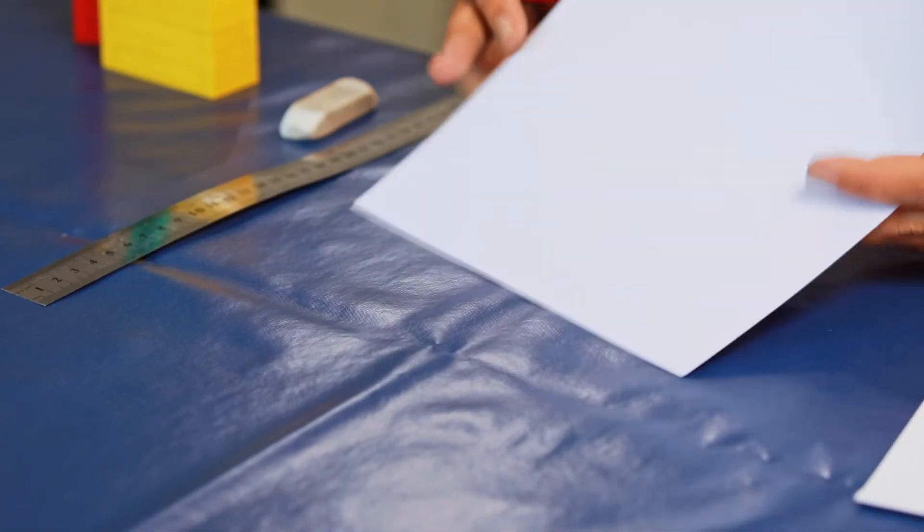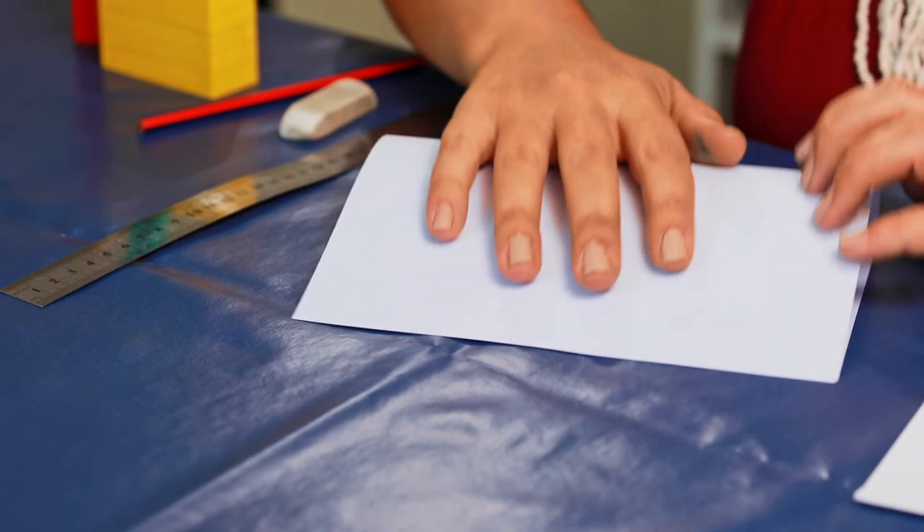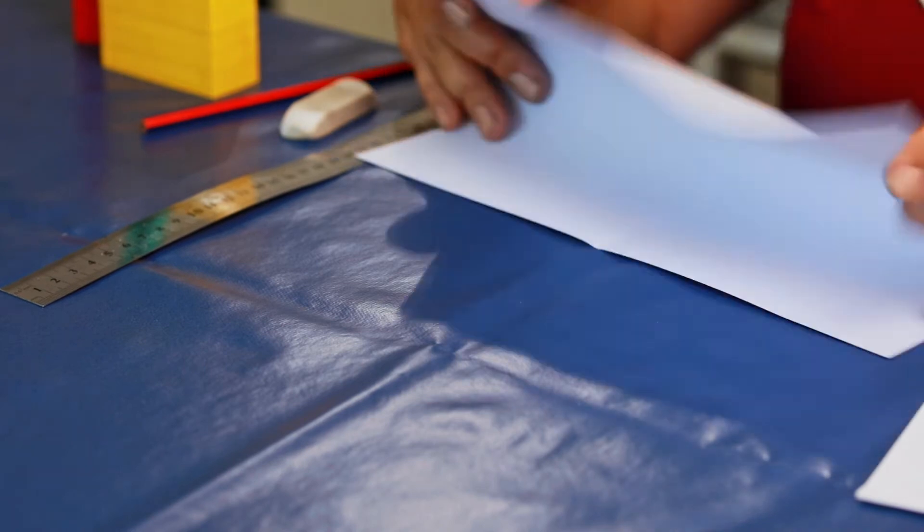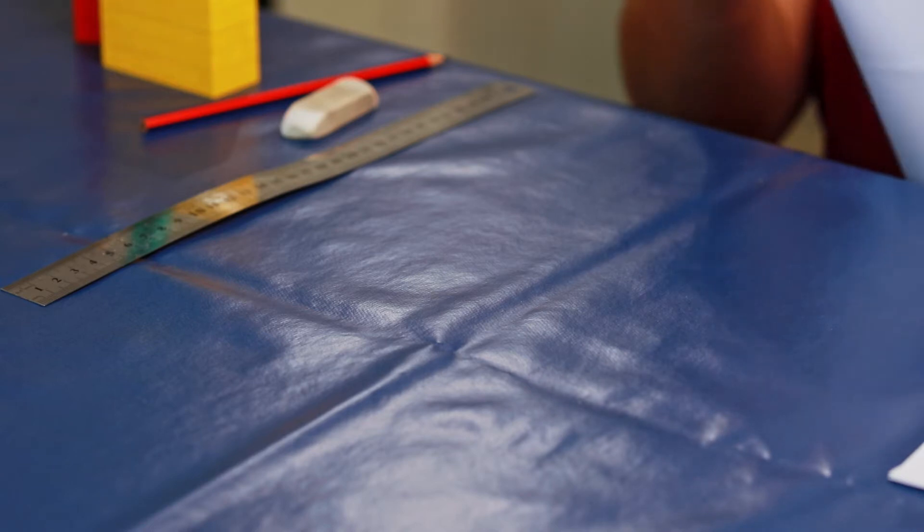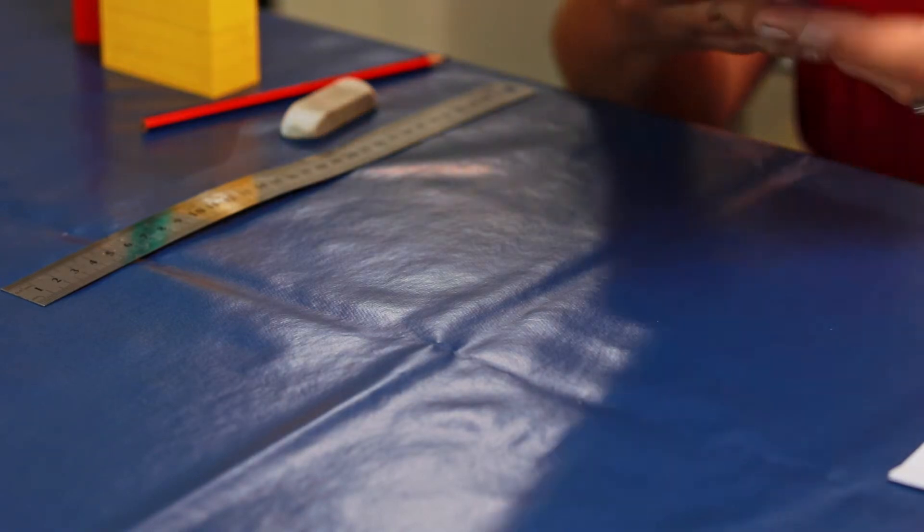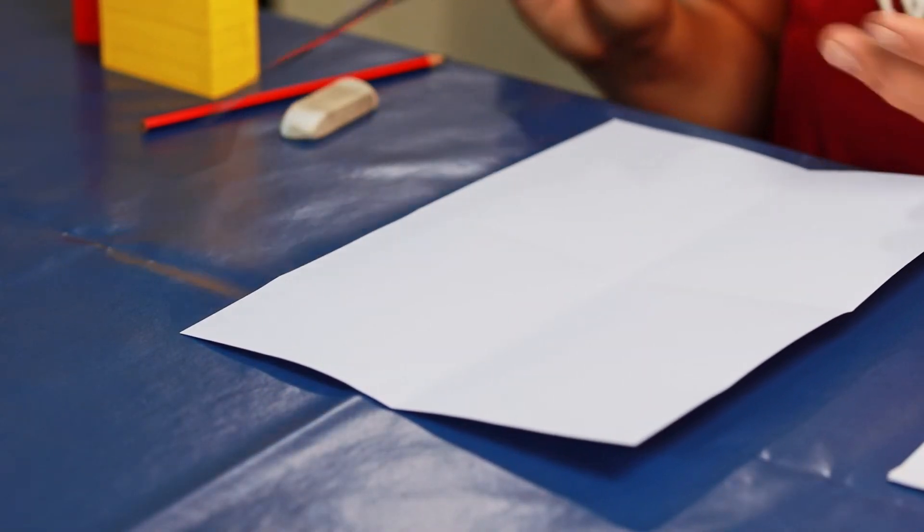Right, the first thing that we're going to do is fold our page in half. So first going to fold it in half horizontally and then vertically. You could measure it out and just find the midpoint of the page and draw a light line with your ruler if you didn't want to fold the page.